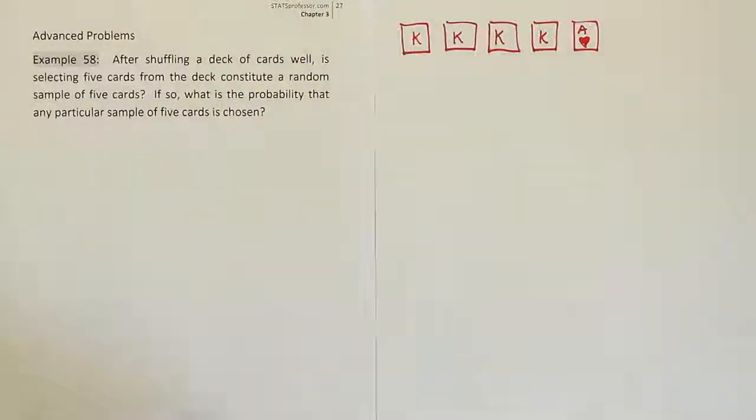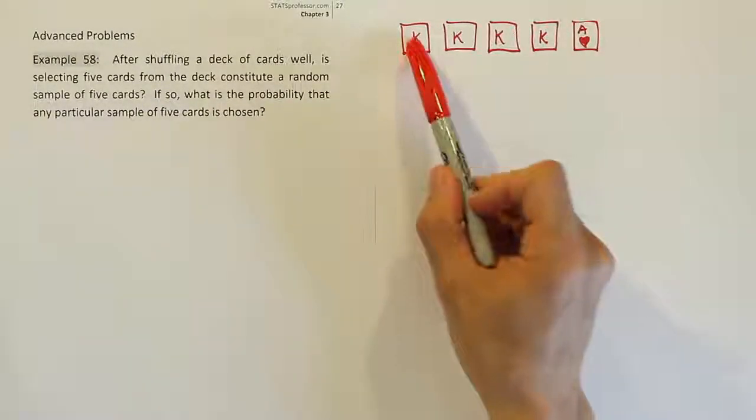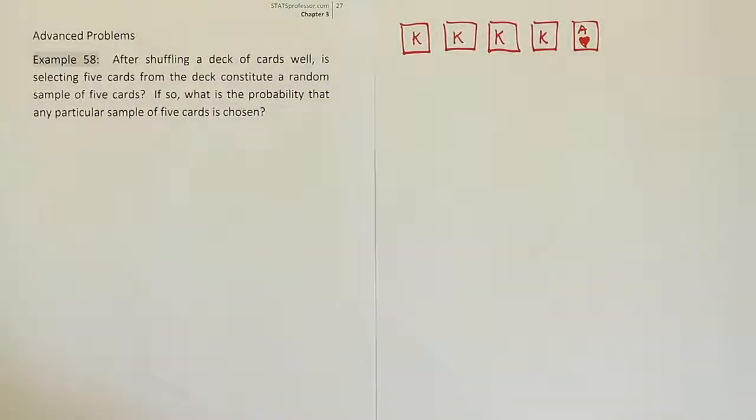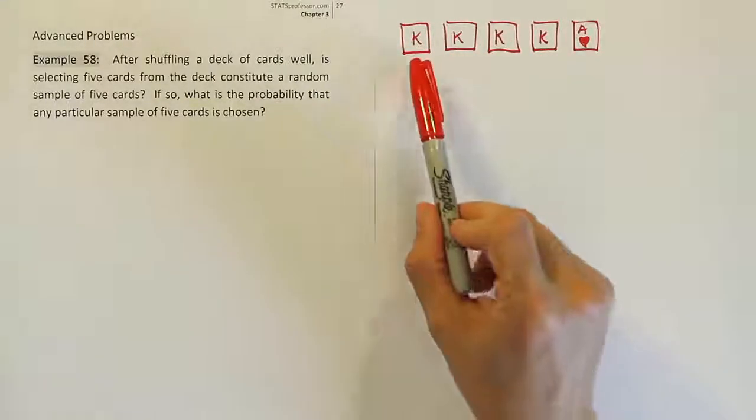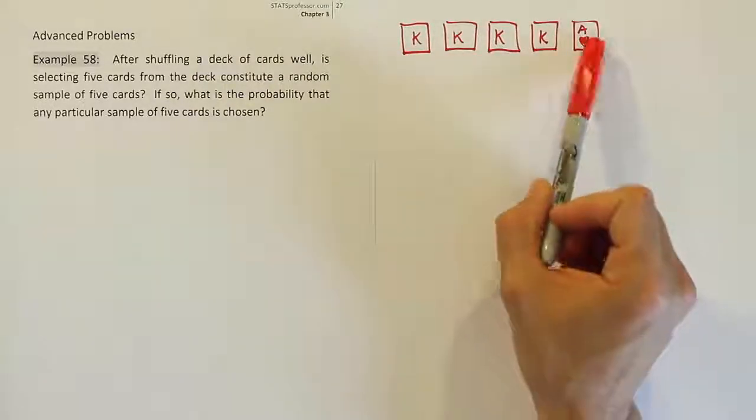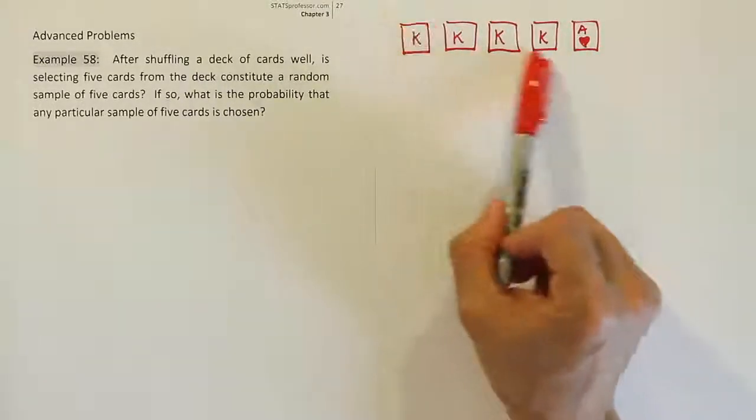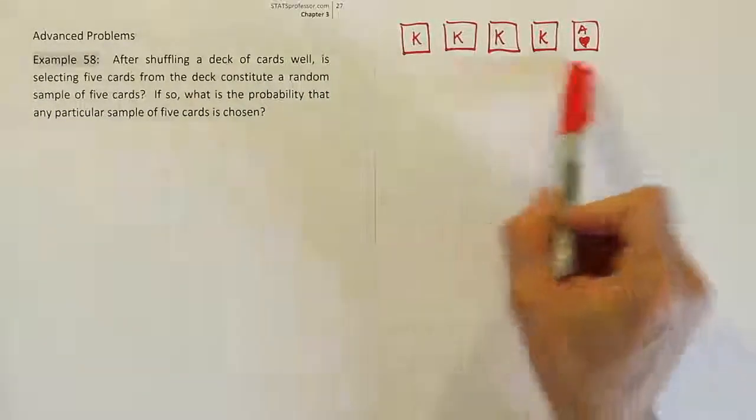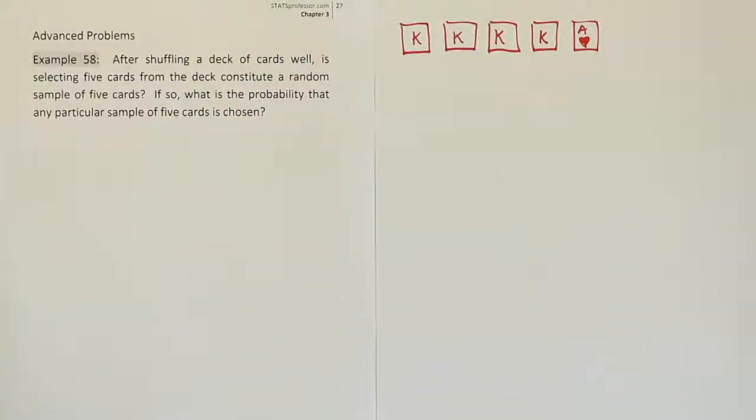And of course the four kings would actually have to be the king of diamonds, king of hearts, king of spades, king of clubs. One thing that's important to realize in cards is it doesn't matter the order in which this is selected. No matter how you scramble up these five cards, it's the same five card hand in a game of poker or any other card game. The order of the cards does not matter.